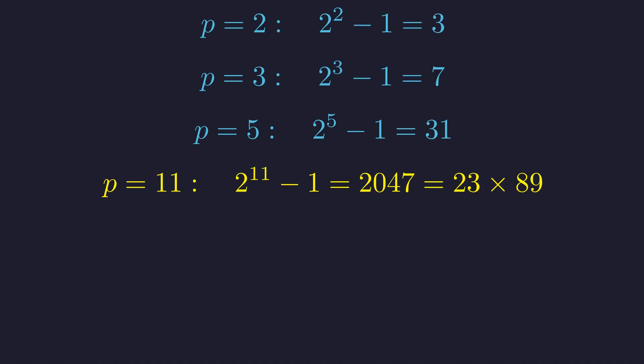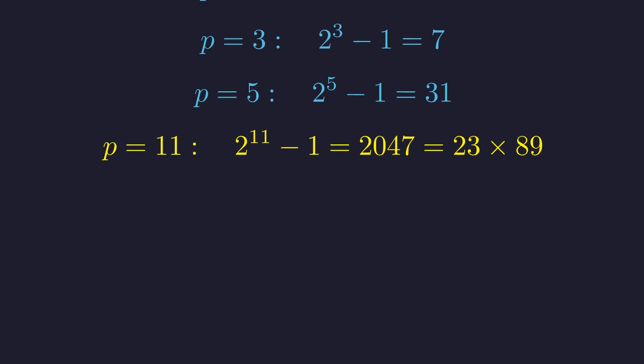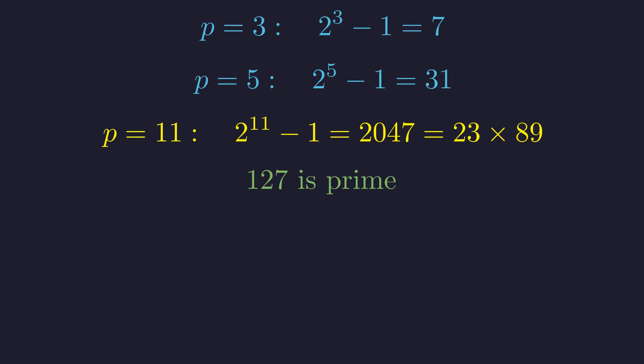This is exactly why the number 2 to the 127 minus 1 sparks curiosity. Since 127 is prime, there's a chance its Mersenne number might also be prime. But we can't just assume.